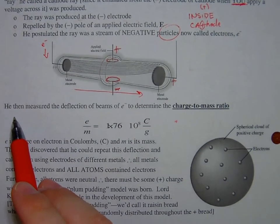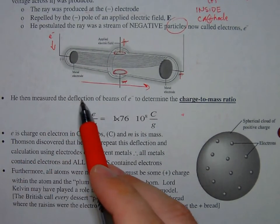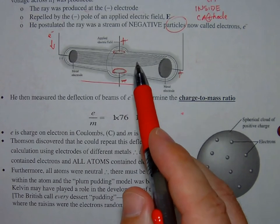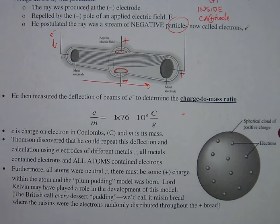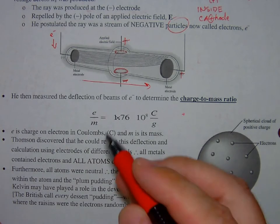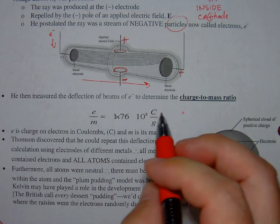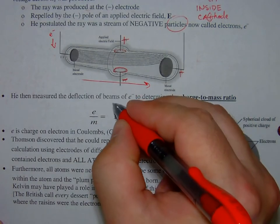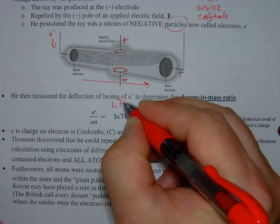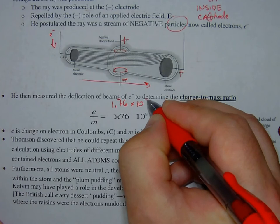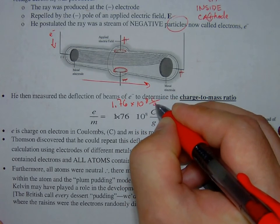Now, Thomson then went on to measure the deflection, the extent of the deflection of the beam of electrons, and he was able to determine the charge-to-mass ratio. So when you take the charge and divide it by the mass, you get a value. There's a formatting error - this should look like 1.76 times 10 to the eighth coulombs per gram. A little formatting error, hope that doesn't freak you out.